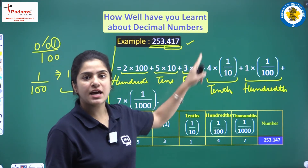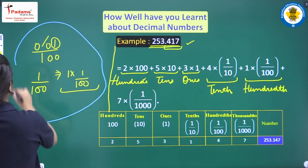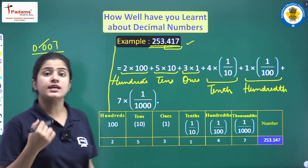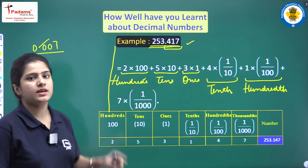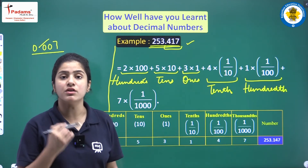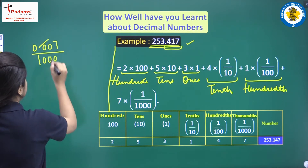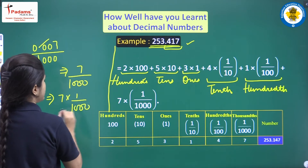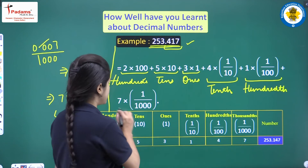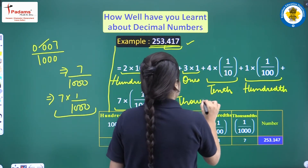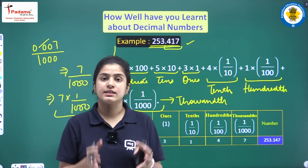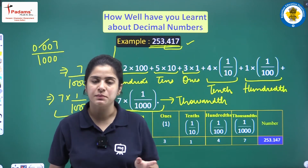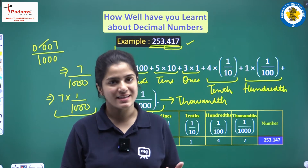Now 0.007 — remove the decimal. How many digits are there after the decimal? Three digits: 1, 2 and 3. So we'll have 3 zeros at the denominator over 1, making it 7 upon 1000. It can be written as 7 into 1 upon 1000. This is the thousandths place. Remember: the digit immediately after the decimal is the tenths place; the digit at the second position is the hundredths place; the digit after 2 digits of the decimal is the thousandths place.